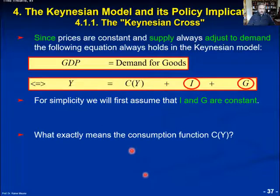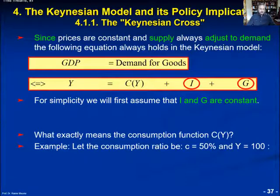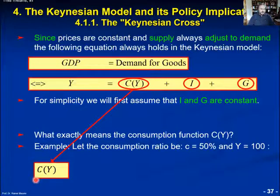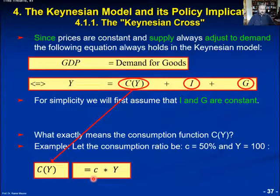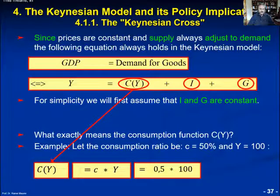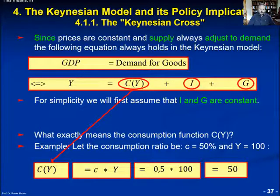What exactly does this consumption function C, depending on household income which equals GDP, mean? Let's make a numerical example. Let's assume that the consumption ratio — the part of income that is consumed — equals 50%, and that income or GDP equals 100 units. So this general expression for the consumption function can be substituted by a concrete function: C equals the consumption ratio times household income. Filling in the numbers, we find that consumption equals 50% times 100, which is 50.